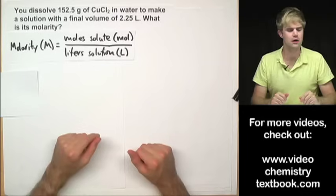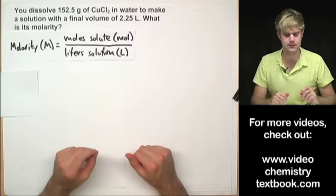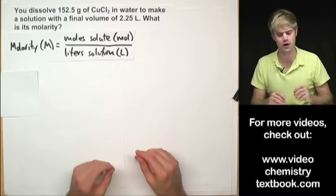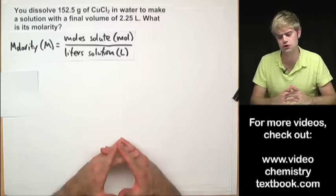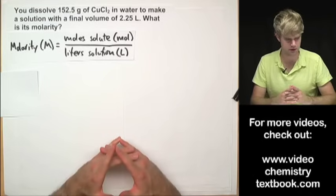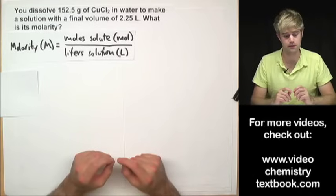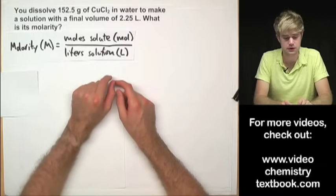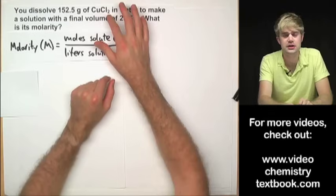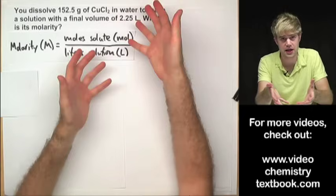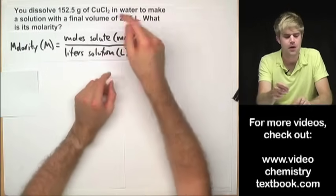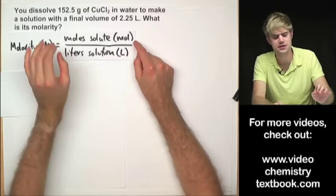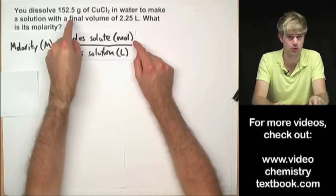You dissolve 152.5 grams of CuCl₂ (copper chloride) in water to make a solution with a final volume of 2.25 liters. What is its molarity? For molarity, we want moles of solute divided by liters of solution. CuCl₂ is our solute, but the problem gives us grams, not moles, so we can't use that number directly.